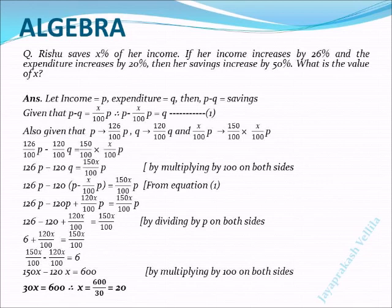Let's replace q by its value. Its value is given in equation 1, p minus x by 100p. So 126p minus 120 into p minus x by 100p equal to 150x by 100p. Open the bracket, we get 126p minus 120p plus 120x by 100p equal to 150x by 100p.